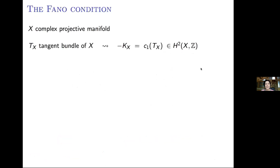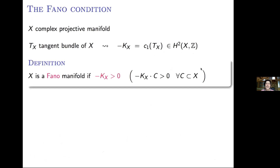Let me explain the classical Fano condition. We are working with a complex projective manifold X, we look at its tangent bundle and its first Chern class, and we say that X is a Fano manifold if this anticanonical class is ample — positive. In other words, if you intersect it with any curve C, this gives a positive integer. This intersection number precisely measures the curvature of X along C.